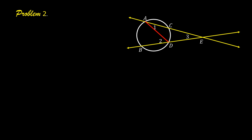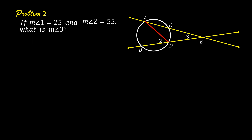Let us solve problem number two. If the measure of angle 1 is 25 and the measure of angle 2 is 55, what is the measure of angle 3? Let us look at the figure. Angle 1 here is an inscribed angle. Angle 2 here is also an inscribed angle, and its intercepted arc is arc CD. Angle 2 is also an inscribed angle and its intercepted arc is arc AB. The measure of an inscribed angle is equal to one-half the measure of the intercepted arc.